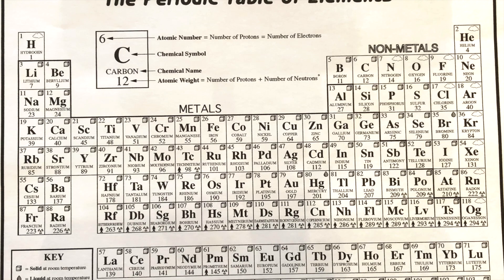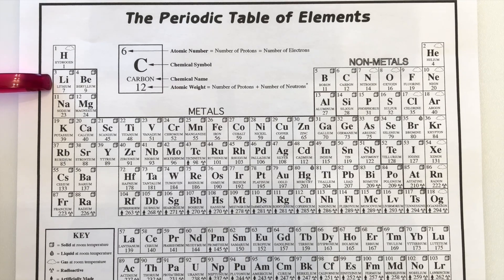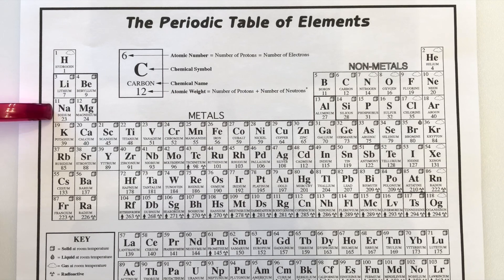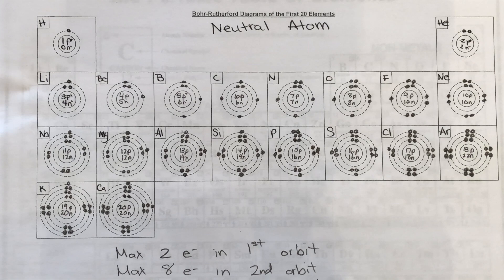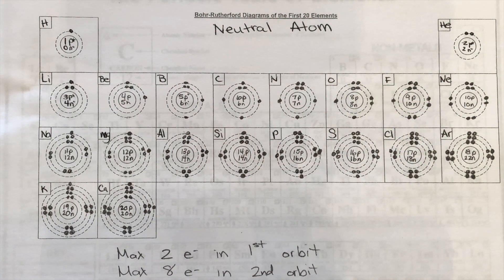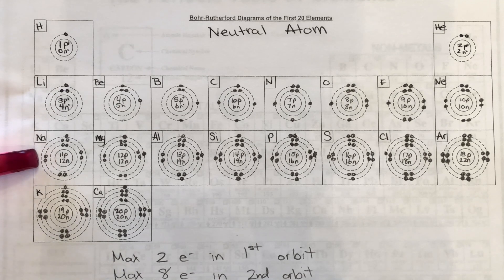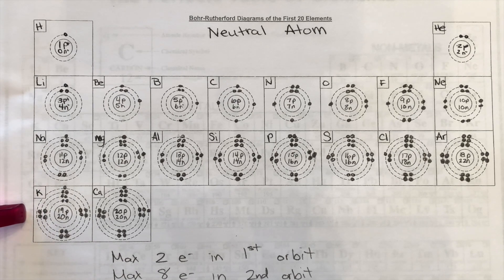The row number corresponds to how many electron shells you draw on Bohr-Rutherford diagrams. Row one elements have one orbit, row two elements have two electron orbits or rings, row three elements have three shells, and row four elements have four shells. For example, hydrogen and helium have one orbit, and elements in row three have three electron orbits.